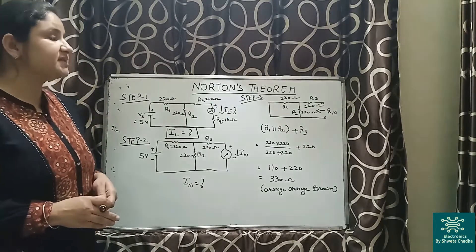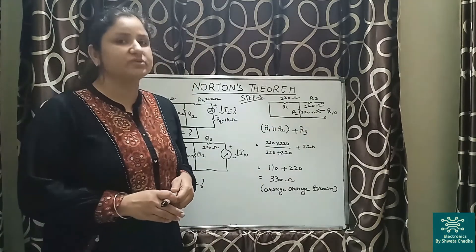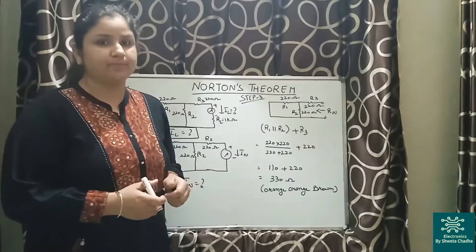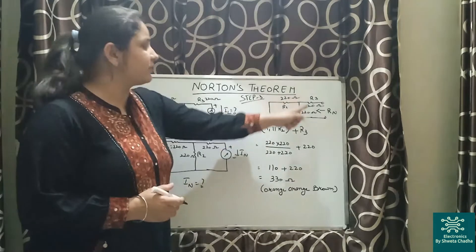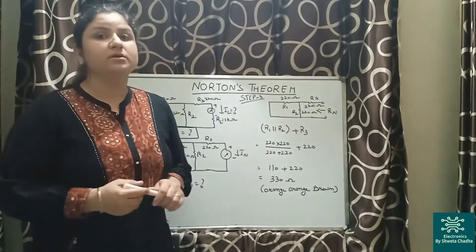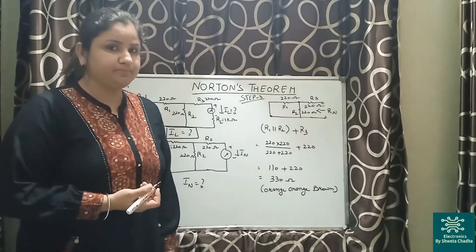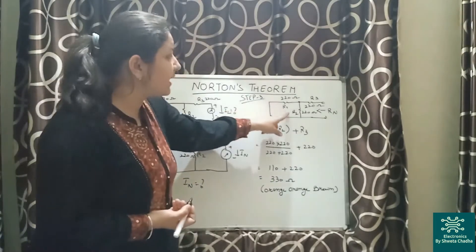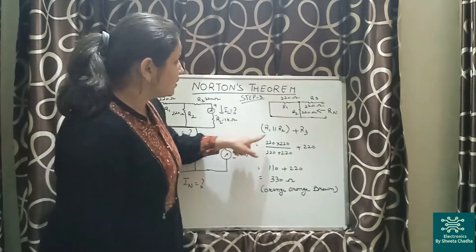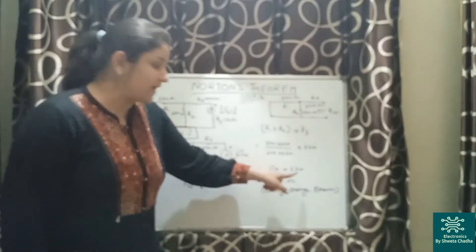In step number 3, we are supposed to calculate Rn, that is the Norton resistance. For that, I have removed Vs and short-circuited it. Remove Vs and short circuit. Now let us calculate Rn: R1 is in parallel with R2 first of all — because both terminals are directly short-circuited, that is, directly connected with each other, giving a parallel connection — and then this parallel combination is in series with R3, because only one terminal is connected.